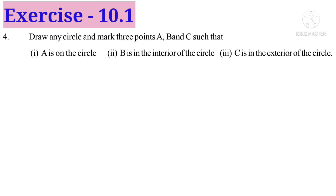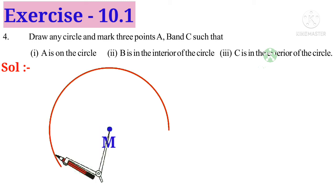Number four: Draw any circle and mark 3 points A, B and C such that A is on the circle, B is in the interior of the circle, C is in the exterior of the circle. Solution: Take a point and name it as M. Now put the needle part at M. Now hold the hinge and rotate in anticlockwise or clockwise direction. Now a circle is formed.